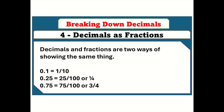Breaking down decimals — decimals as fractions. Decimals and fractions are two ways of showing the same thing. 0.1 equals 1 tenth. 0.25 equals 25 one-hundredths, or 1 quarter. 0.75 equals 75 one-hundredths, or 3 quarters.